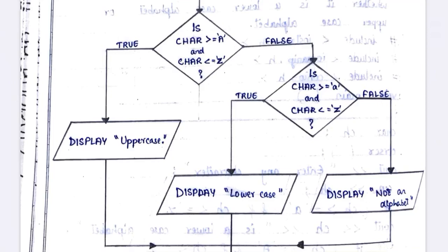On the false path, it checks the next condition: whether the character is within small letter 'a' and small letter 'z'. If that is true, it comes to the true part and displays 'it is a lowercase'. If that is also false, it comes to the false part and displays 'it is not an alphabet'.